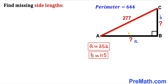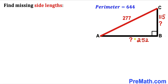So our missing side a turns out to be 252 units, whereas our missing side b turns out to be 115 units. That's our final answer. Thanks for watching and please don't forget to subscribe to my channel for more exciting videos. Bye!